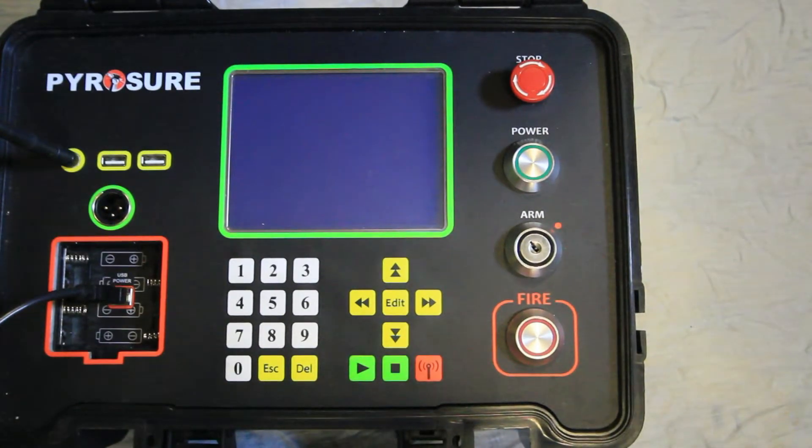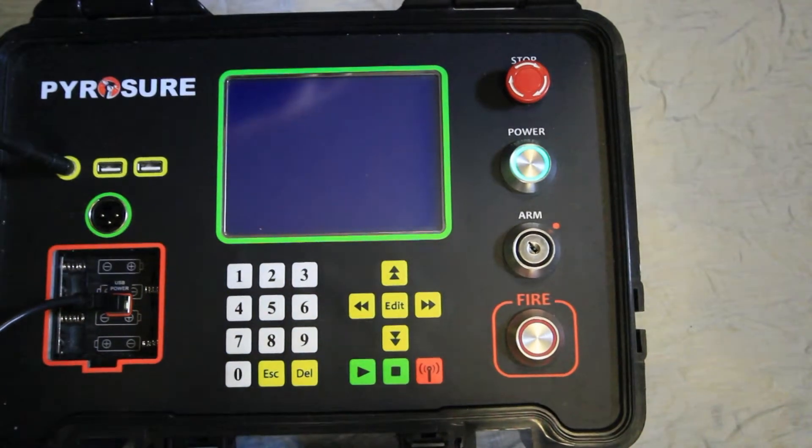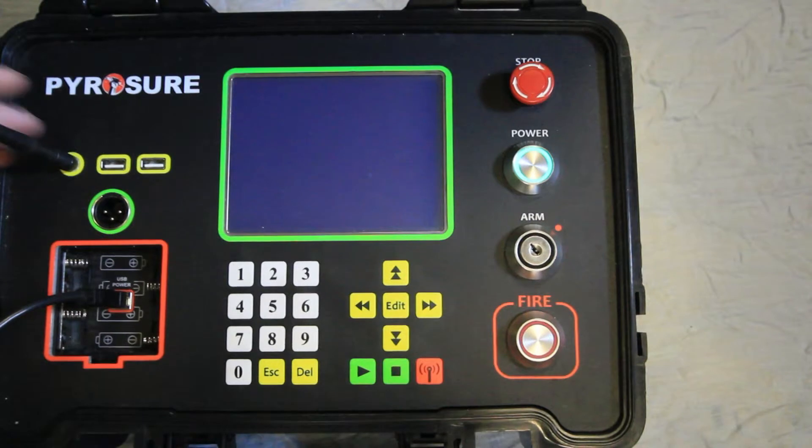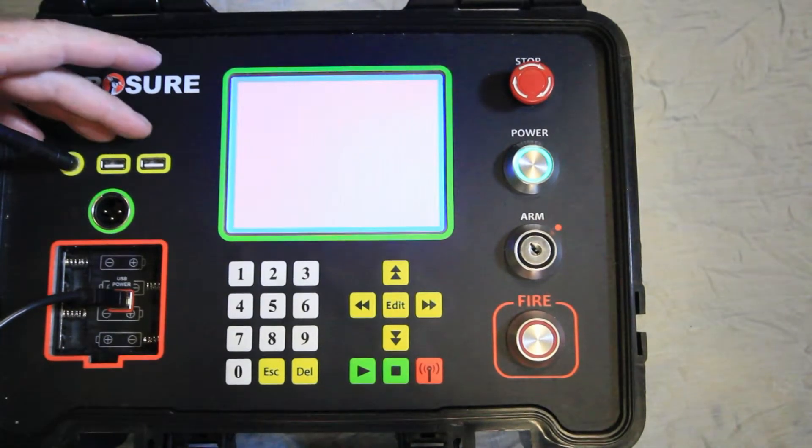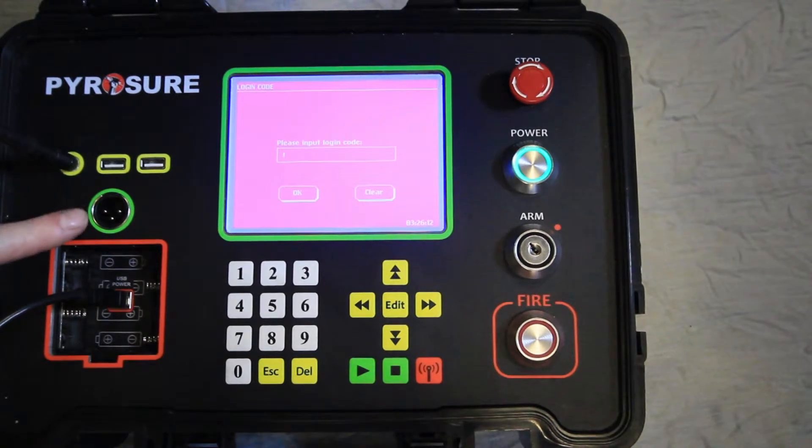This is the PyroSure controller with touch button screen, power switch, 2dB antenna, 2 USB ports, and music feed which requires a female XLR and phono lead.